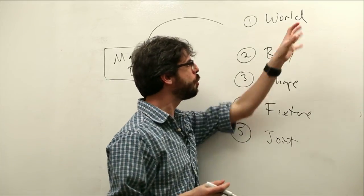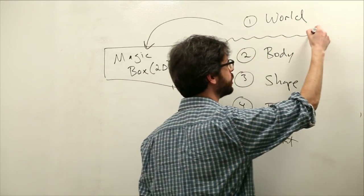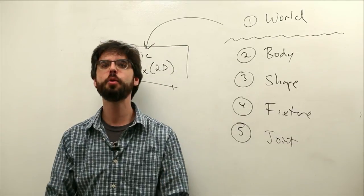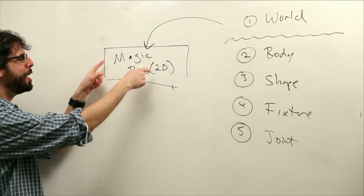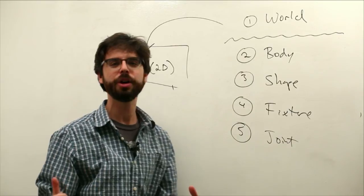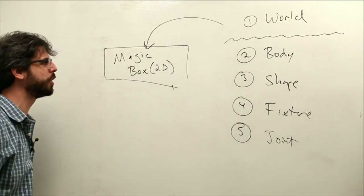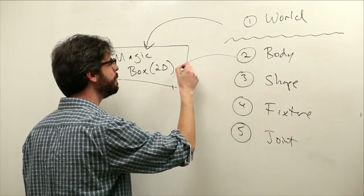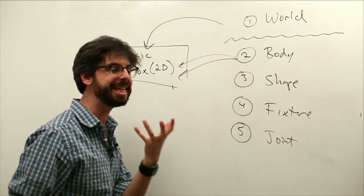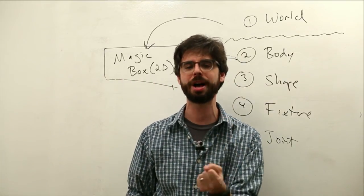So the key, the world first of all, we should kind of leave world up here. The world is this magic box. So that's the world. The first thing we're going to do in a Box2D example is create that world. The second thing we're going to do in a Box2D example is start to put bodies in that world.